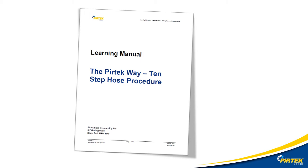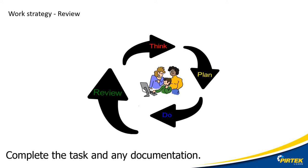I used the stamped analysis to identify the hose. Now I'm going to use the 10-step hose procedure to manufacture the hose. Thinking about the job and planning the job ensure that I have all the right materials and tools ready and available to complete the job. Think, plan, do, review.